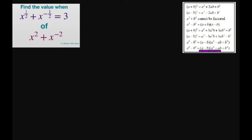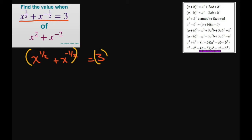So to make this easier, the first thing let's do is — we're given x to the power of 1 half plus x to the power of negative 1 half equals 3, and if we square both sides, that's going to help us get to where we want to be.